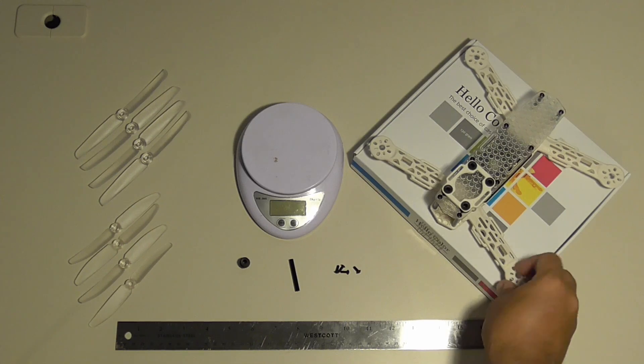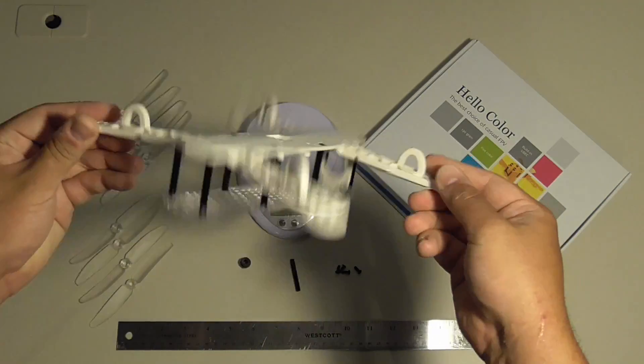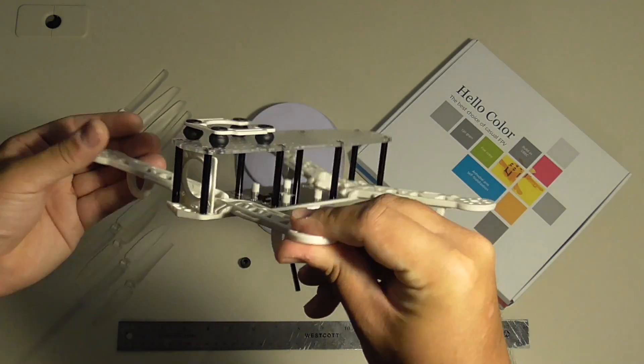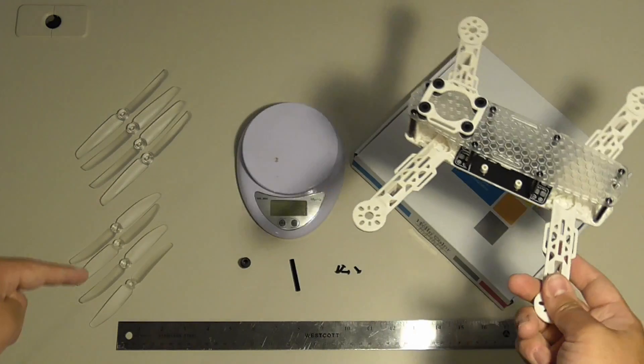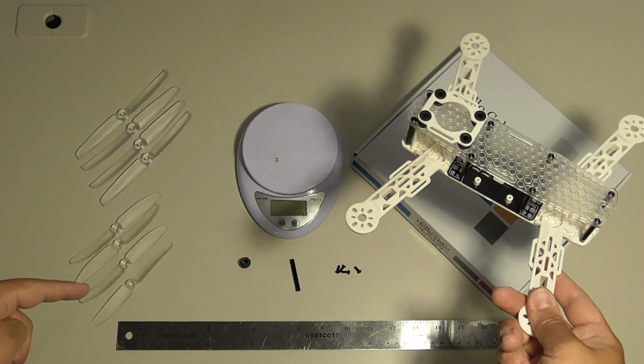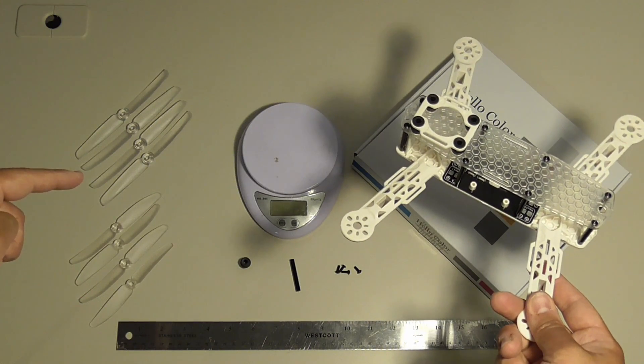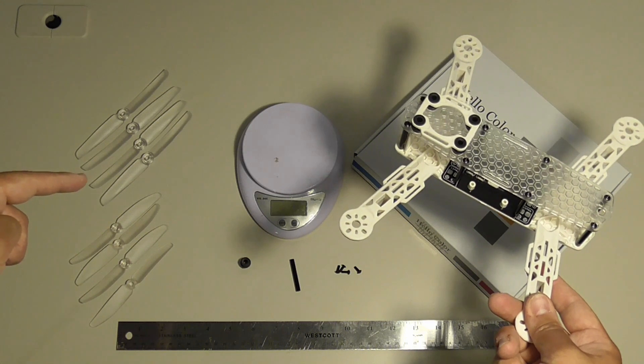Here we have the H-King Color 250 mini quad frame. The kit includes four 5x3 Diatone props and also four 6x3 Diatone props.